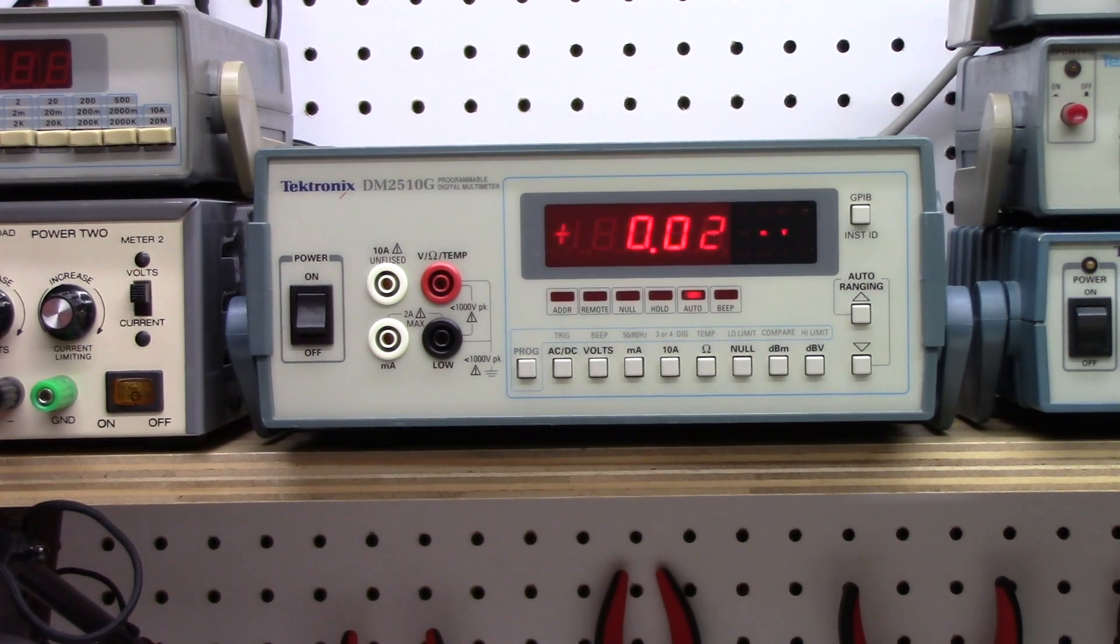It's a Tektronix DM2510G digital multimeter. I don't know much about this particular model of meter. There's exceedingly little information available on the internet concerning this model. But the few bits of information I have been able to find suggest that this is a meter from the 1980s or very early 1990s era.